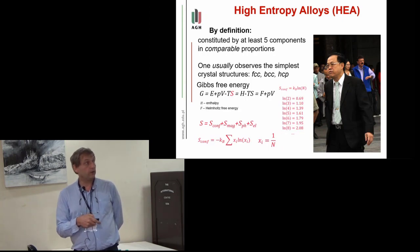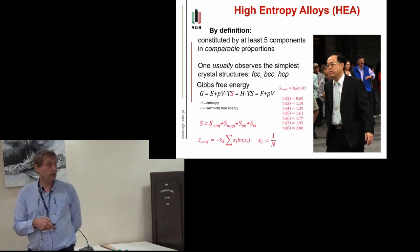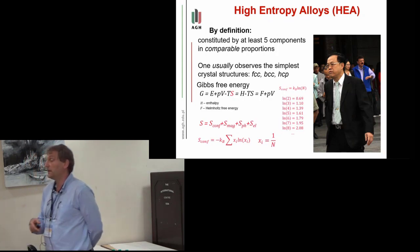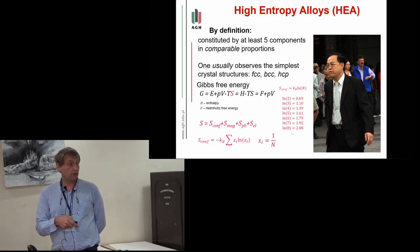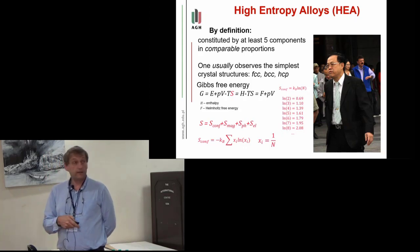In the case where you have five components in comparable proportions, configuration entropy of this system can be calculated analytically. It is simply proportional to the natural logarithm of the number of constituents and can get very high values. For example, for five components you have 1.61, which is a rather big value, and this term, especially in higher temperatures, can dominate the Gibbs free energy.